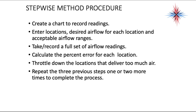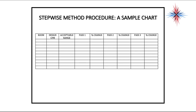For the stepwise method procedure: create a chart to record your readings — normally your company or accrediting organization has charts available. Enter the locations, the desired airflow for each location, and the acceptable airflow ranges. Take and record a full set of airflow readings. Calculate the percentage of error for each location — how much has it deviated from desired. Then throttle down the locations that deliver too much air. Repeat these steps one or two more times. The maximum number of passes in the stepwise method should be three.